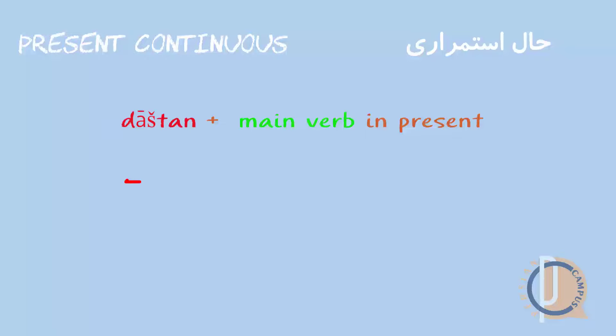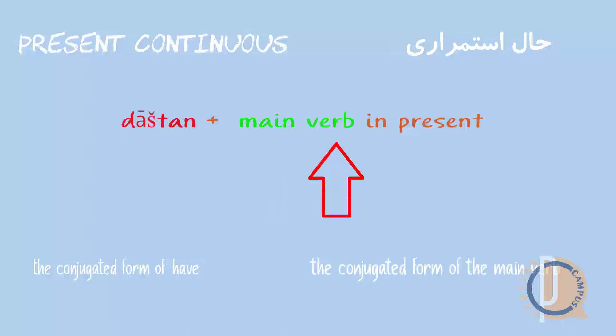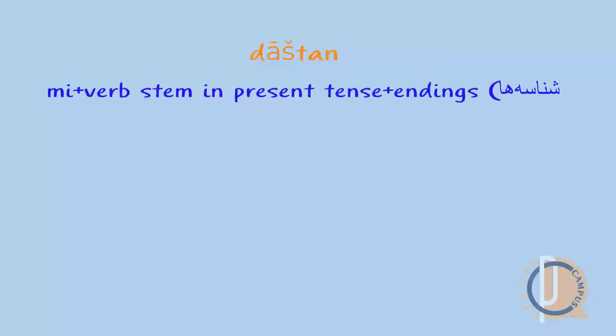The general structure of this tense is: the conjugated form of the verb 'daştan,' meaning 'to have,' plus the conjugated form of the main verb in the present tense. We have to conjugate 'daştan' as a normal verb in present tense for person and number, and then add it before the main verb. Remember, 'daştan' does not take the prefix 'mi,' which is used before verbs in present tense.